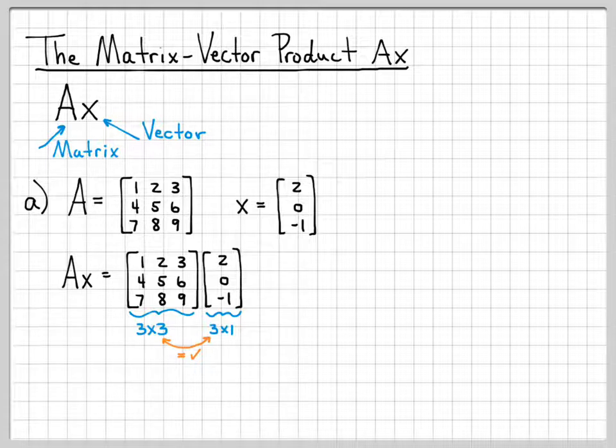Anytime you do a multiplication of a matrix times a vector, or a vector times a matrix, or a matrix times a matrix, or a vector times a vector, the interior dimensions here, these right here, these have to match. In this case, the number of columns in A equals the number of rows in X. Both of those are equal to 3, so that tells us that this quantity is properly defined and we can actually compute what Ax is.